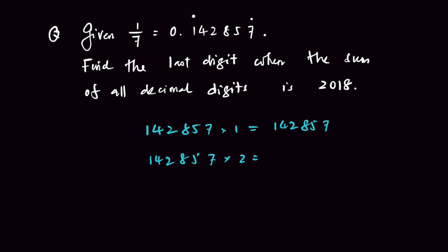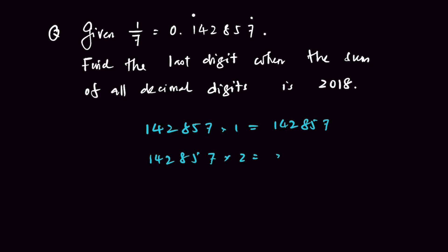So 142857 times 2 equals 285714. But do not get carried away — it stops at 142857 times 7, when you get 999999.